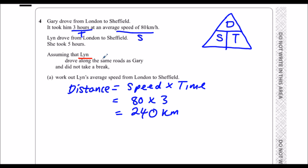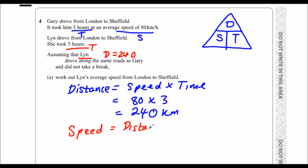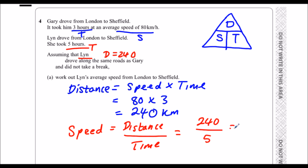Now Lynn has driven down the same road, so same distance — the distance is 240 kilometres — and her time is 5 hours. We're going to work out the speed. Using the formula triangle, if I cover the S, I've got distance divide by time. So 240 divided by 5. To divide by 5, you can divide by 10 and then double it. 240 divided by 10 is 24, double that is 48. So 48 kilometres per hour.